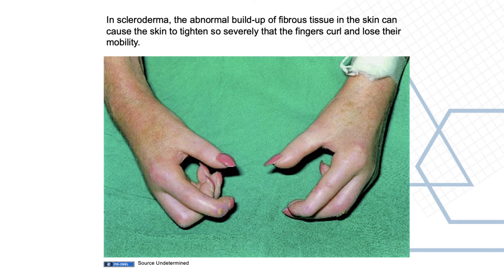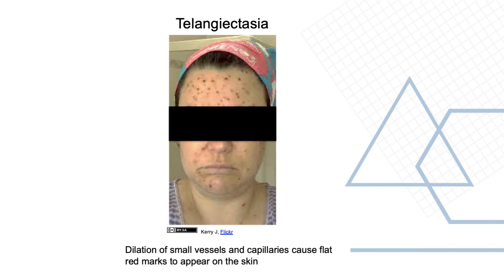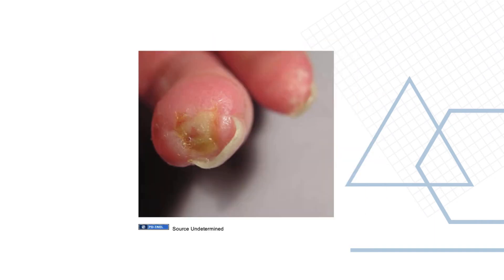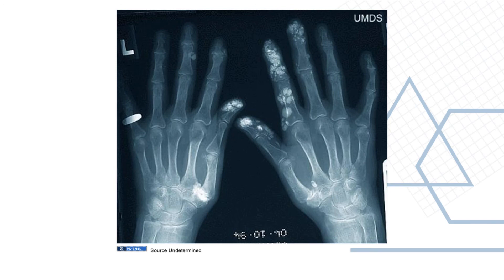In scleroderma, the abnormal buildup of fibrous tissue in the skin can cause the skin to tighten so severely that the fingers curl and lose their mobility — this is a classic picture of scleroderma. Telangiectasias can also occur, which is a dilatation of the small vessels and capillaries causing flat red marks to appear on the skin. These are the bony changes seen on X-rays.